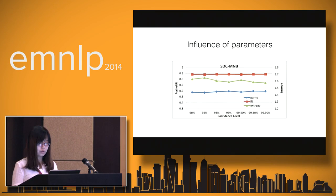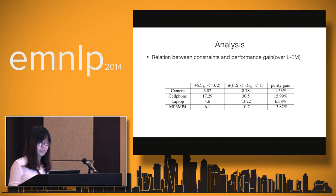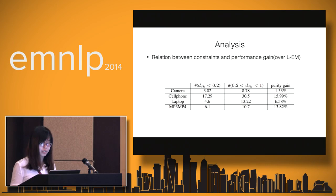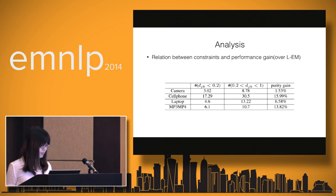We also show the influence of the confidence level parameter used to calculate the confidence interval, and we can see that our model is robust to this parameter. Here is another analysis between the statistical constraint and the performance gain. The D_JK value — for all products and each phrase, we count how many D_JK values are less than 0.2. We can see that for the cell phone domain, we have the most informative constraints, which may explain why our method gets the largest purity gain in the cell phone domain over the existing state-of-the-art method.